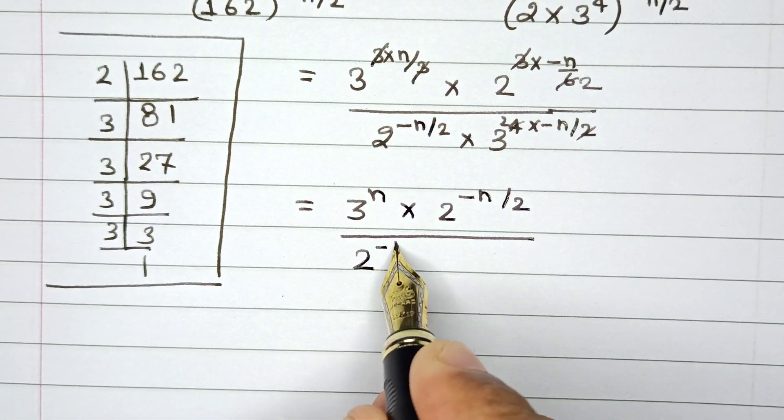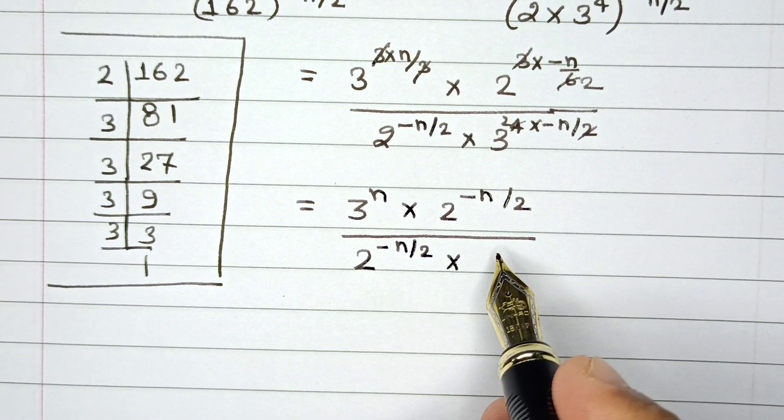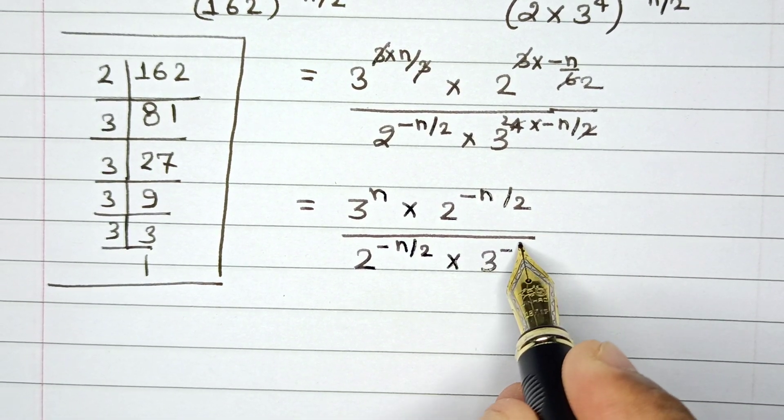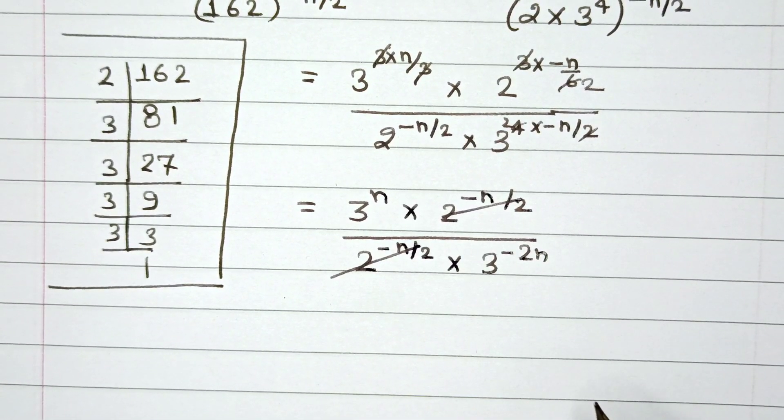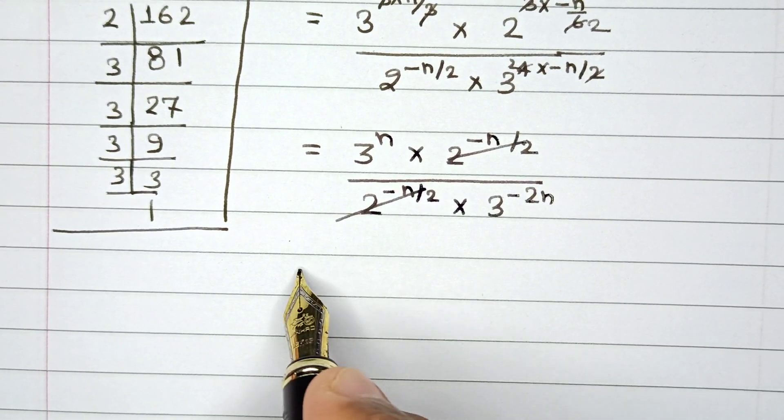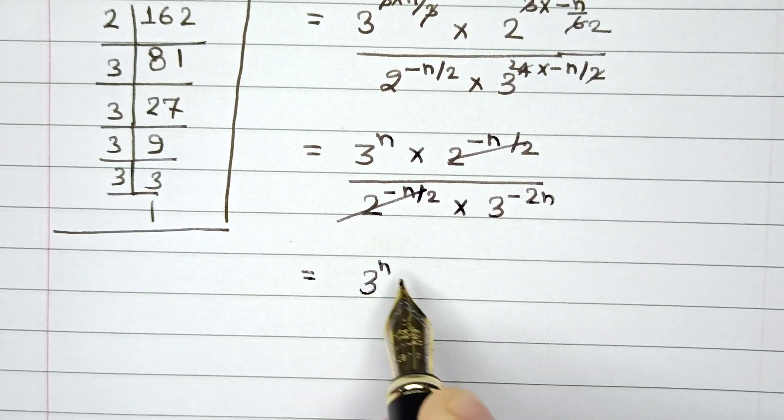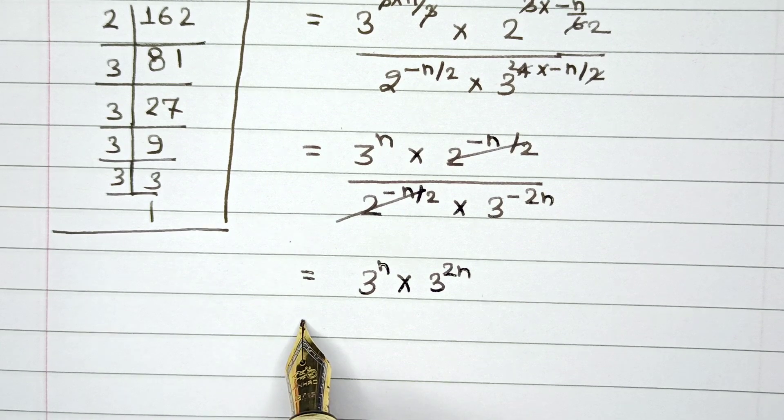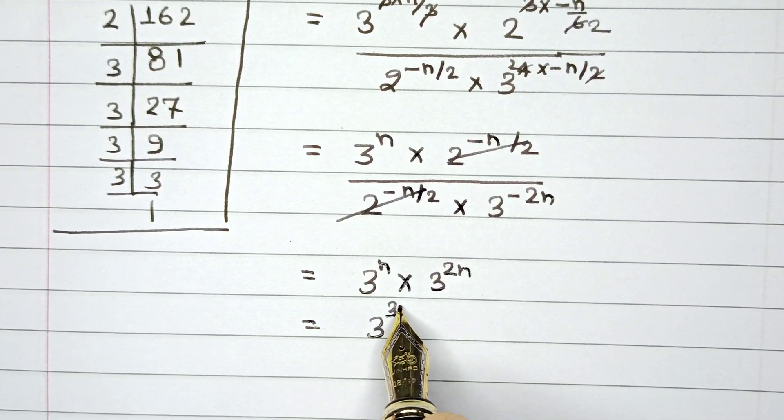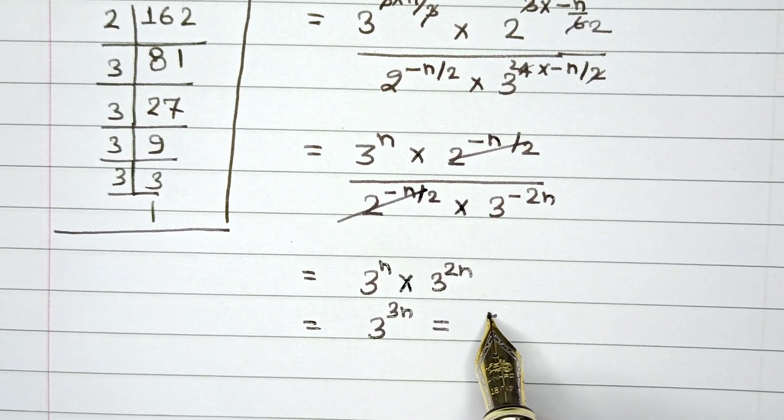...this is then divided by 2 raised to the power minus of n by 2 multiplied by 3 raised to the power of minus 2n. So as you can see we can cancel out these two numbers right here, and using the base change property this can be written as 3 raised to the power n multiplied by 3 raised to the power of 2n, which can then be added. So this is 3 raised to the power 3n...